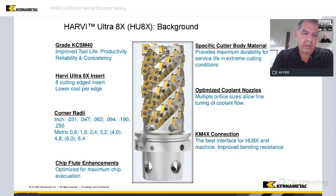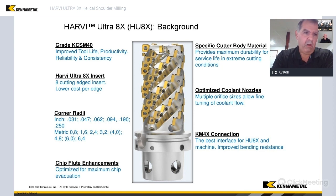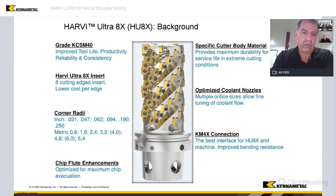These aerostructure component parts are fairly large, so they go on large machines. Machines like cutting tools wear out over time because these are aggressive applications. If we develop a tool that gives lower cost per edge through eight indexes and also delivers lower cutting forces, it means less wear and tear on the spindle of a machine — so it's possible we can actually extend the life of a machine by implementing this tool.